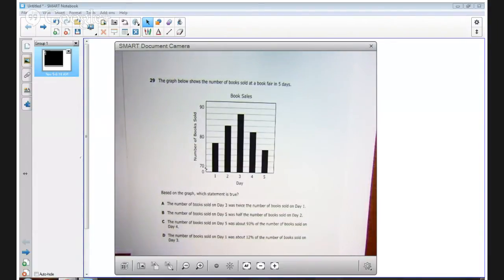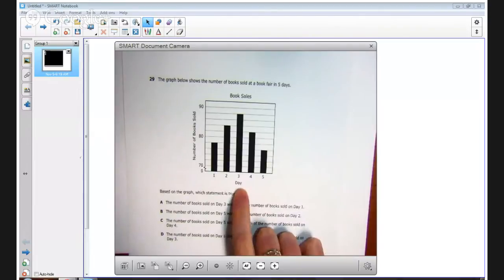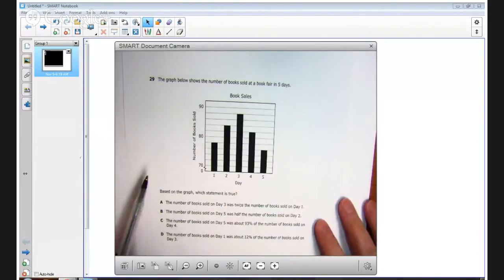It says here, the graph below shows the number of books sold at a book fair in five days. On the horizontal we have the days, and on the vertical we have the number of books sold, and this is a bar graph.